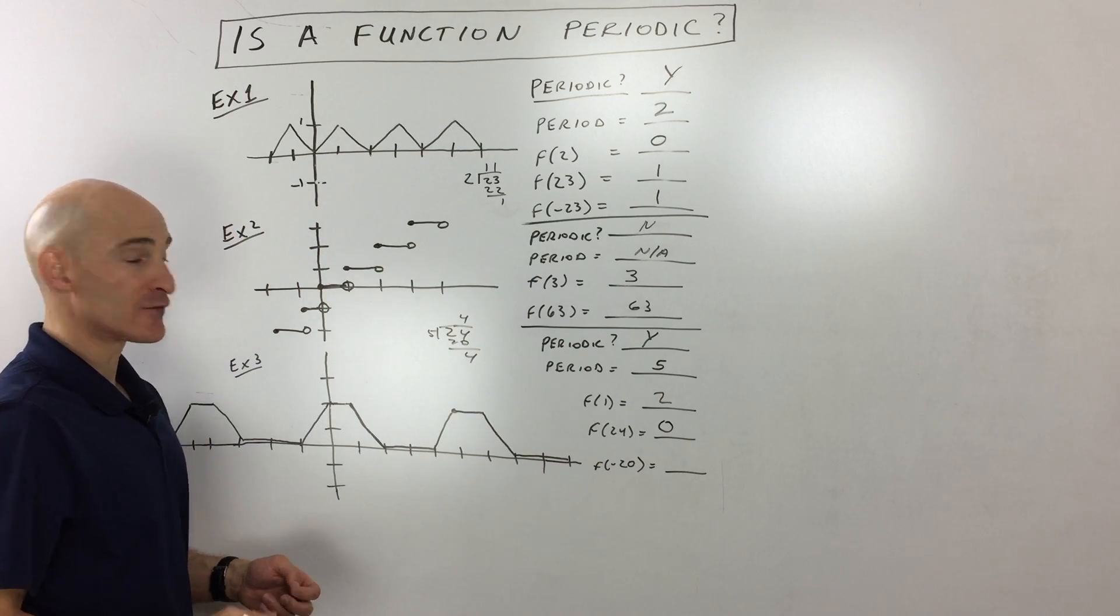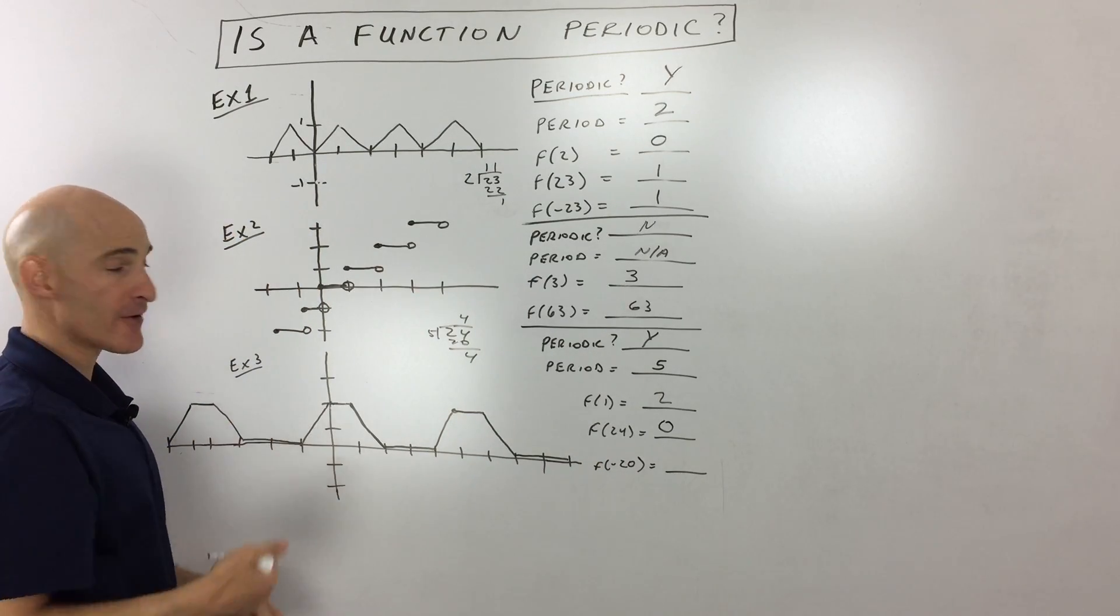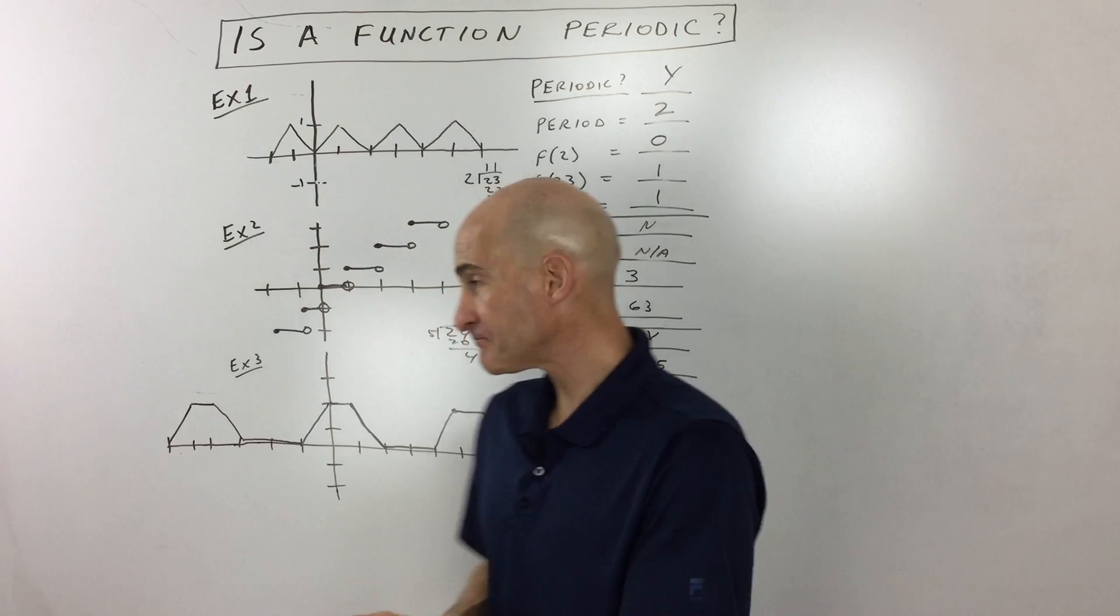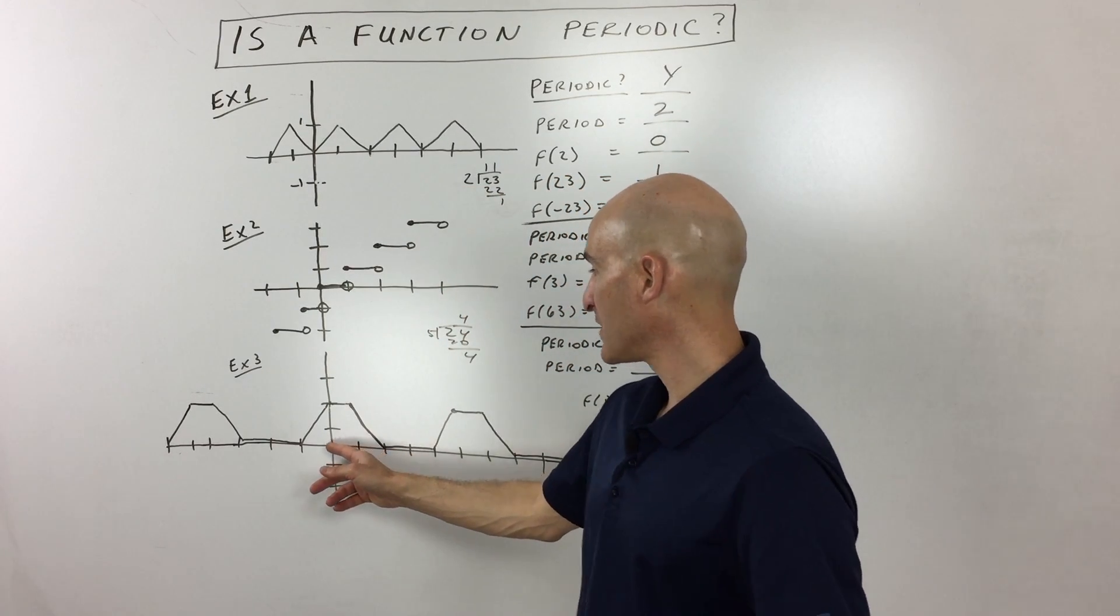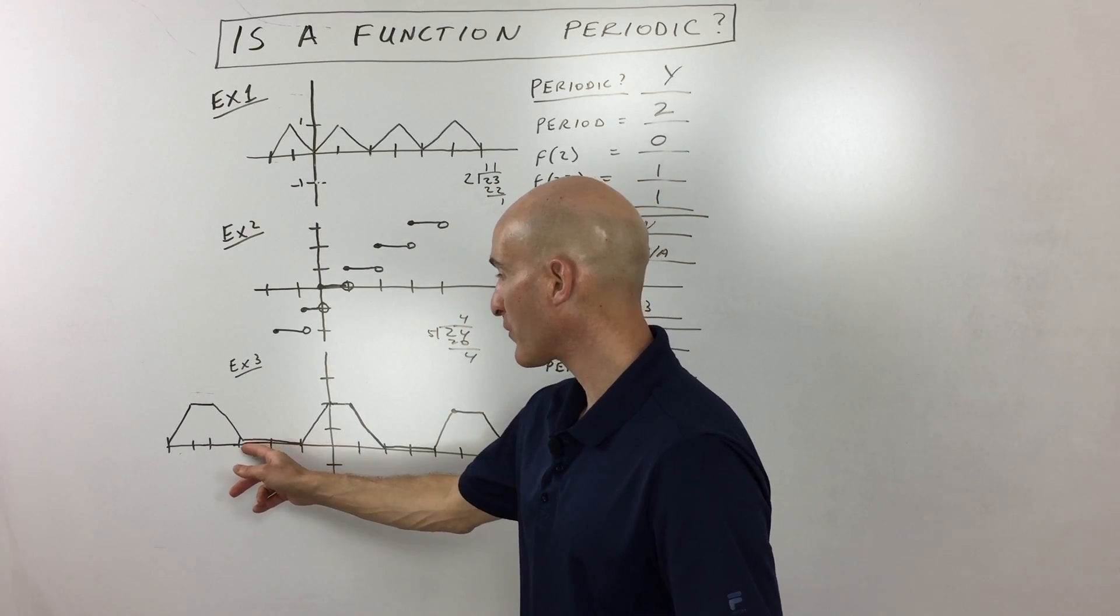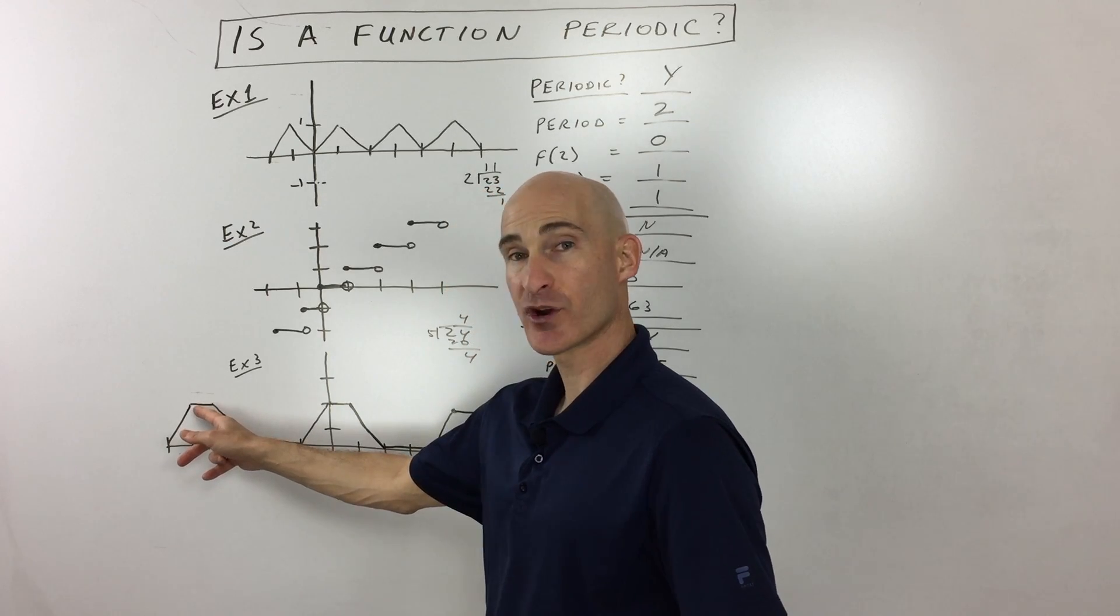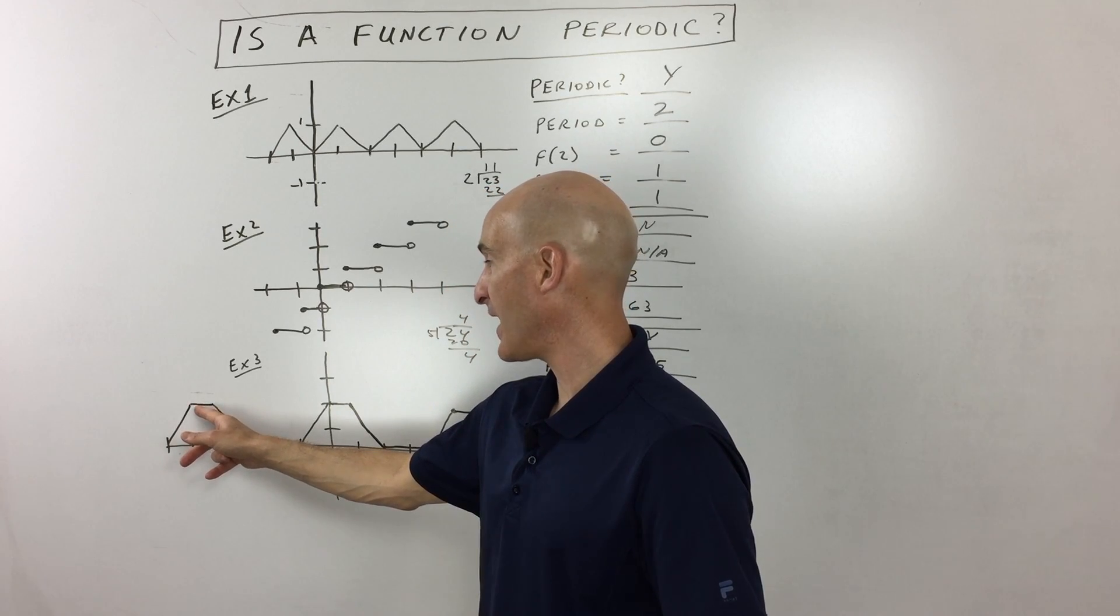And then the last one, f of negative 20, that means we're going to the left 20, right? So let me switch sides here. So to the left 20, that means we're going one, two, three, four, five.